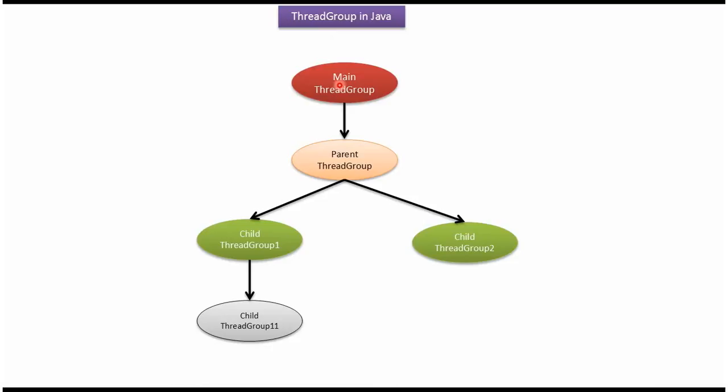Main is the parent thread group of all thread groups. Under the main thread group, we can define a parent thread group. Under the parent thread group, we can define multiple child thread groups.